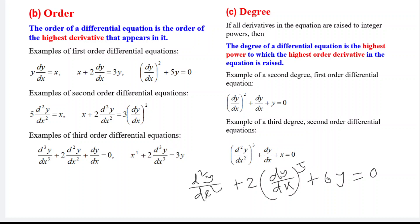Now for degree: degree means the power of the highest-order derivative. In the first example, the power of the highest-order derivative is two, so it is a second-degree, first-order differential equation. In the next example, the power of the second-order derivative is three, making it a third-degree, second-order ODE. If a lower-order derivative has a power of five but the highest-order derivative has a power of one, it remains a first-degree, second-order ODE — because degree is counted only from the highest-order derivative.